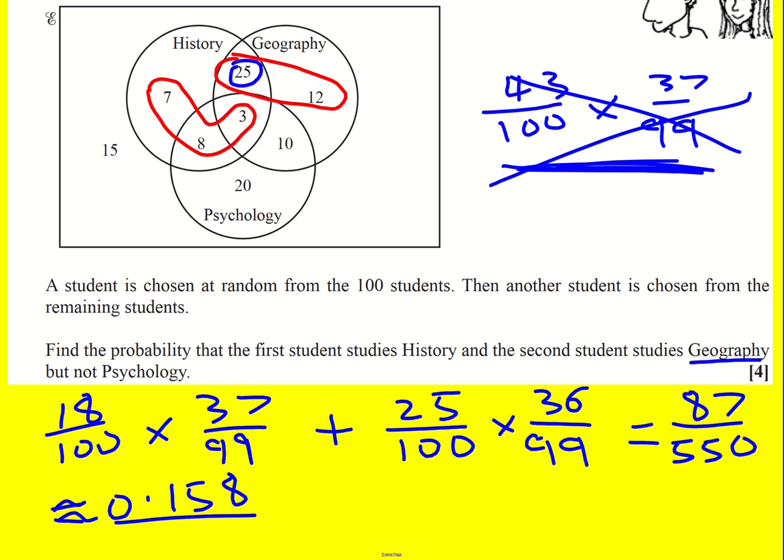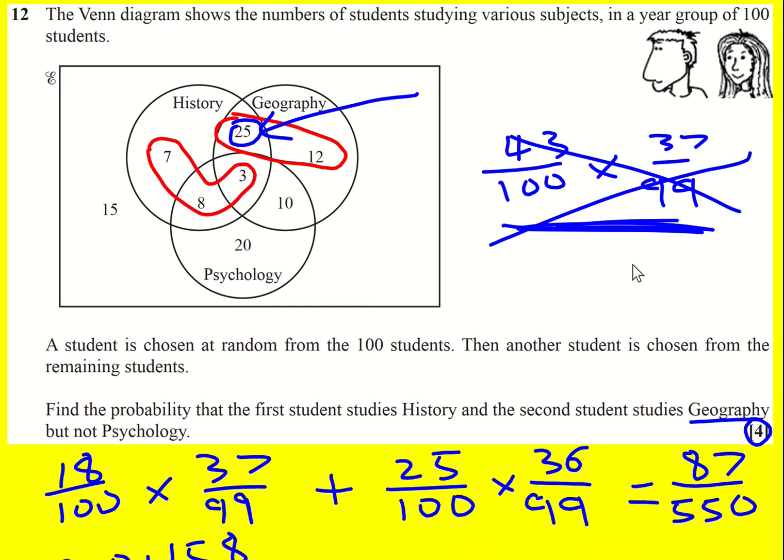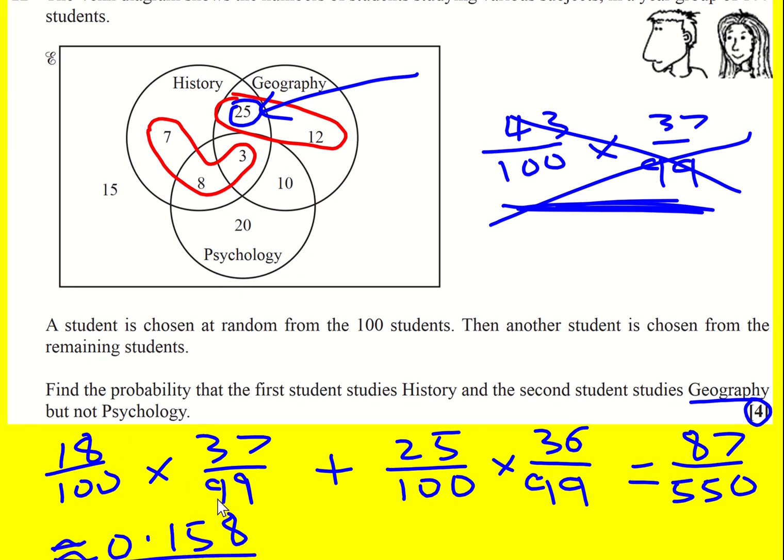You must take into account these people. So if this question caught you out, be really careful when you see a Venn diagram question like this again, because you must think about the different pieces.